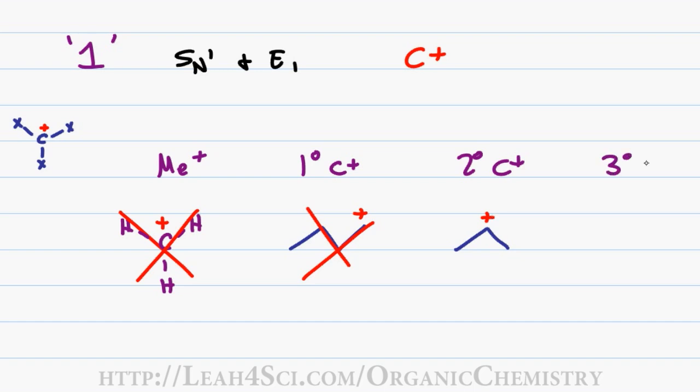Finally, a tertiary carbocation is a carbocation with three R-groups attached. This is the most stable of your standard carbocations and therefore the quickest to form. But don't forget your pi systems, including your allylic and benzylic carbocations.